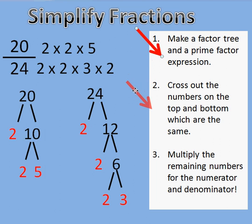Well, now I'm going to come down here. And I'm going to cross out the numbers on the top and the bottom which are the same. So I have a 2 on the top and I have a 2 on the bottom. I'm going to cross them out. I have another 2 on the top and another 2 on the bottom. Well, I'm going to cross that one out too.